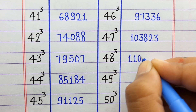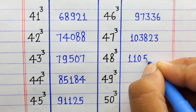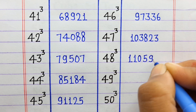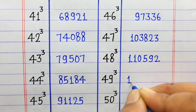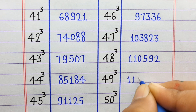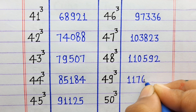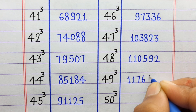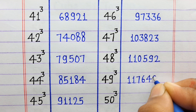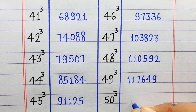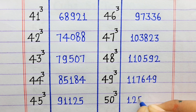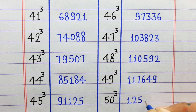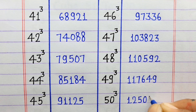48 ka cube 1 lakh 10,592. 49 ka cube 1 lakh 17,649. 50 ka cube 1 lakh 25,000.